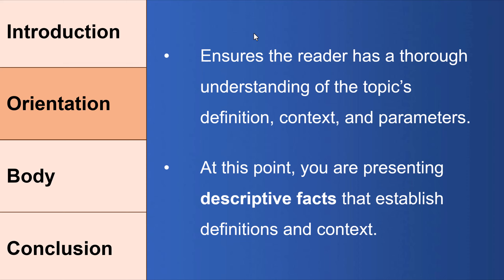Then we move on to our orientation paragraph, which usually ensures that the reader has a thorough understanding of the definition and parameters of the topic. When reading the essay, we all have an agreed-upon definition of all the terms and concepts, because you've oriented the reader to these terms and concepts at the beginning. So oftentimes you'll cite a scholarly definition of the topic so that everyone knows clearly what the topic is about.